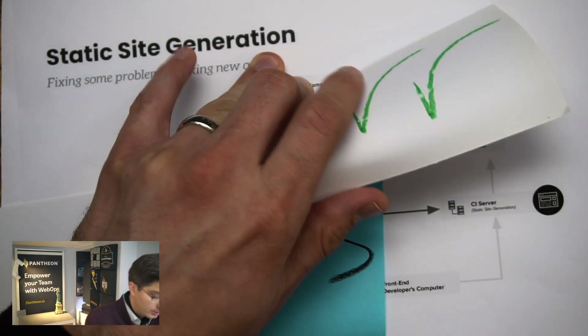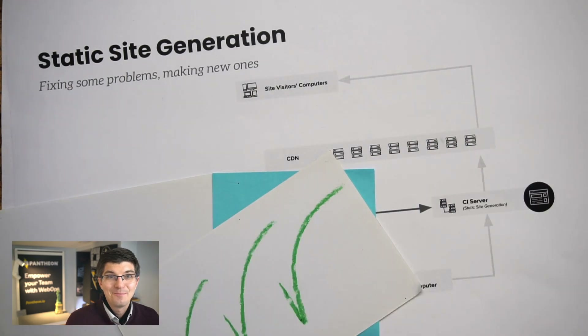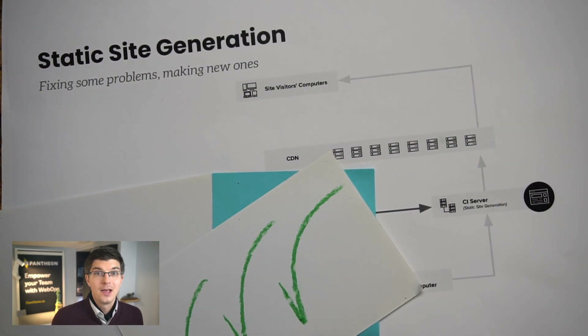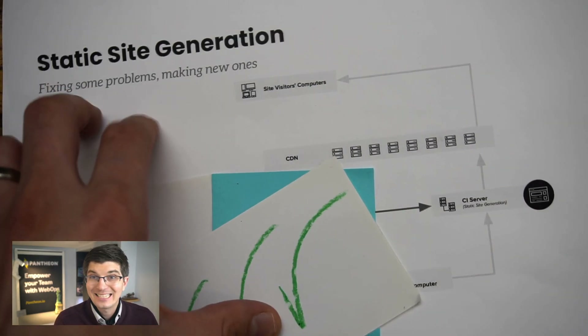When you simplify a website workflow this much, it can work really well for some teams. Pantheon's own documentation site has done static site generation in a GitHub repo for nearly a decade. All the changes are flowing in one direction. As a developer, even before I worked at Pantheon, I can make a pull request and fix a typo in the content. How cool is that?